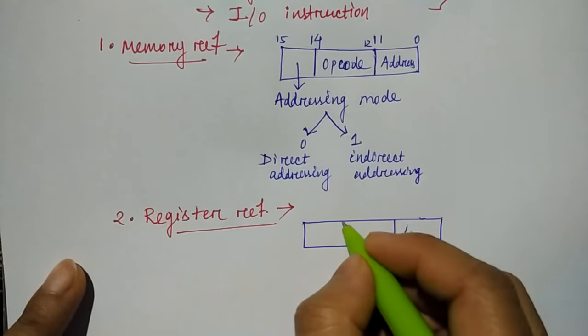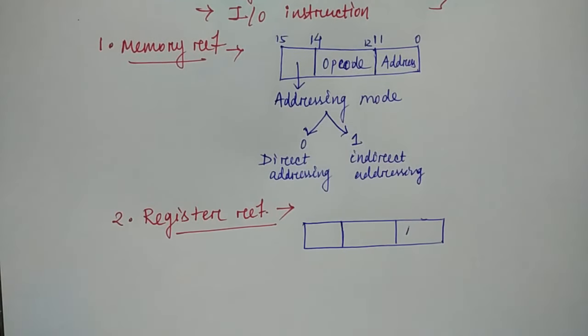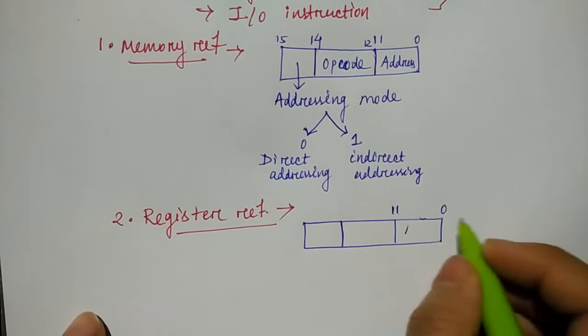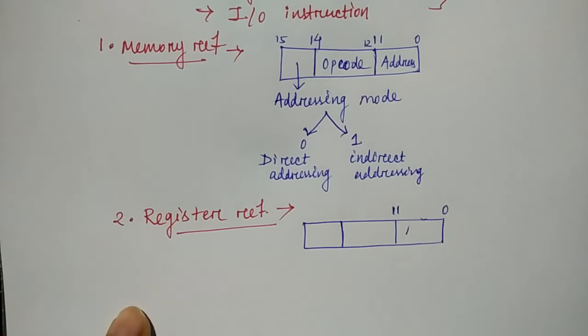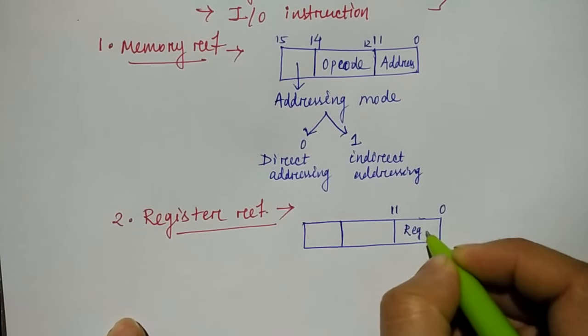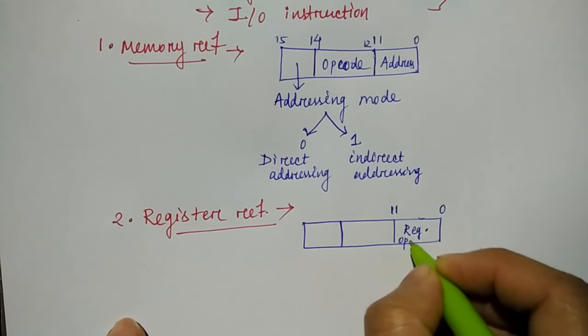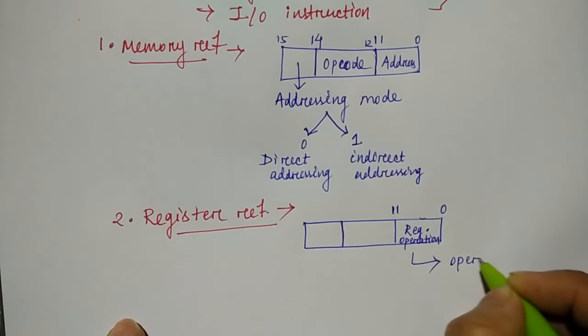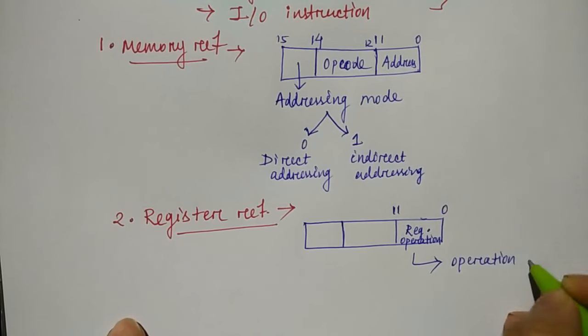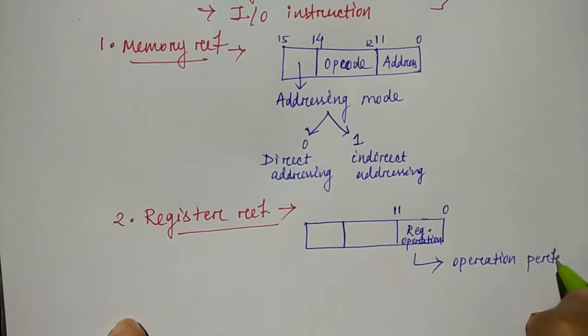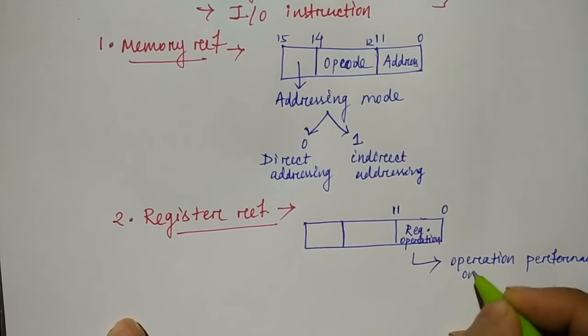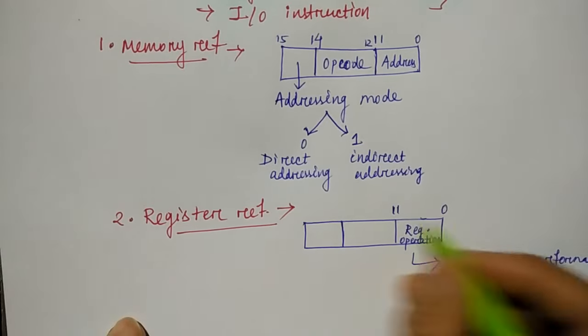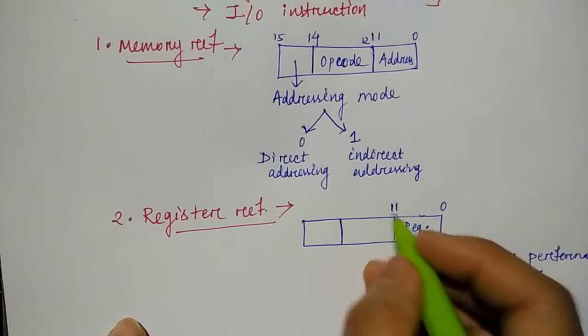So here in last bit is stored an address register operation which is going to be performed, operation performed on register.